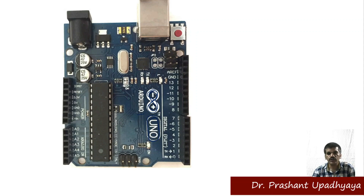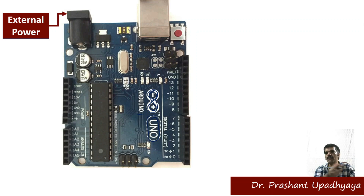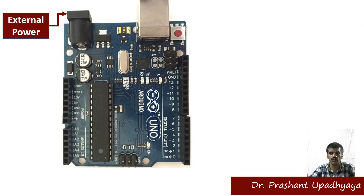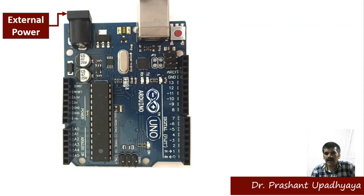The first function is the external power input. If you want to power the board without a USB cable — similar to how toys run on batteries — you can connect a battery here. Just plug it into the external power port and the Arduino board will turn on.